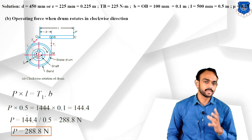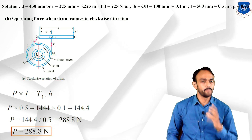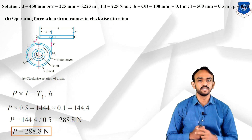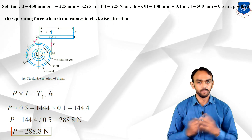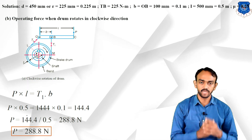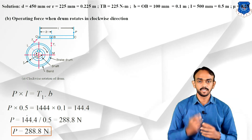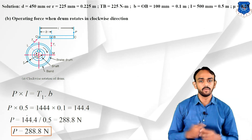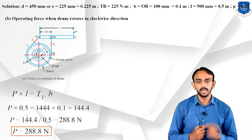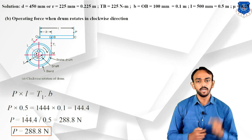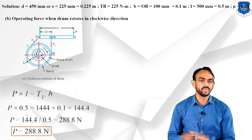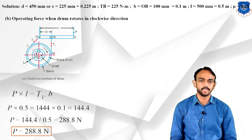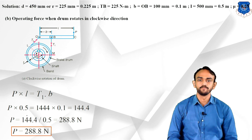In all band brake examples, we first find T1 and T2 using mu and theta (calculating theta if not directly given), and then take the moment equation about the pivot point — which depends on the figure given in the example. Thank you, keep practicing.